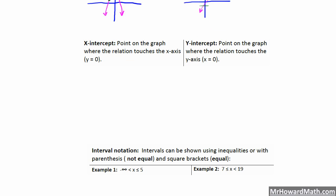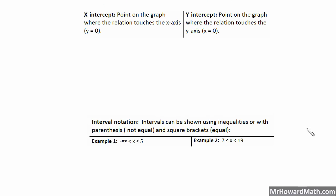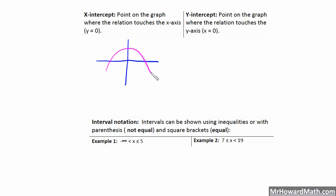Let's move on to some other definitions. Next we have x-intercepts and y-intercepts. X-intercepts are just the points on the graph where the relation touches the x-axis. X-intercepts also have other names: if you see the word root, zero, or solution, all of those mean the same thing — they all refer to an x-intercept. So if we draw this graph, the x-intercepts are where it's crossing the x-axis.